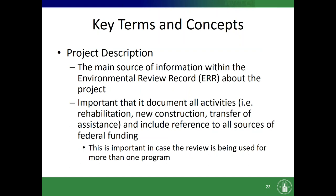Another key idea is the project description — it's really the main source of information within the Environmental Review Record about the project. If everything were somehow wiped out but the environmental review survived in HEROS, this is really the record of what happened and what we assessed. It's important that you document all the activities — what is actually happening — and include reference to all sources of federal funding. This is especially important in case the review is being used for more than one program, so that the review can encompass all reasonably foreseeable activities.